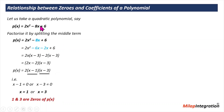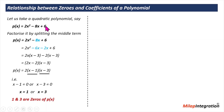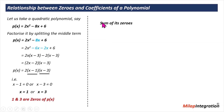Now we know the zeros are 1 and 3, and the coefficients are 2, minus 8, and 6. We want to see if there is any relation between the zeros and the coefficients. So we add and multiply the zeros. The sum of the zeros: 1 plus 3 equals 4. And the coefficients give minus 8 divided by 2, which is minus 4 — noting the sign difference.